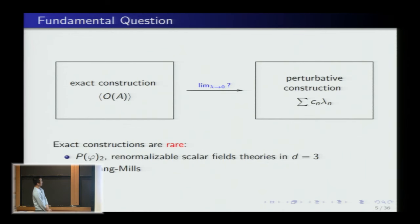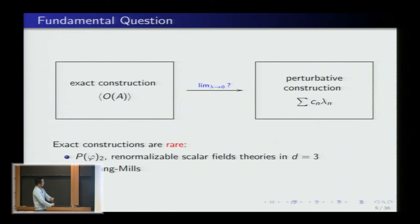For example, we have scalar field theories in dimension 2 — P(φ)₂, polynomial interactions — and possibly renormalizable scalar field theories in dimension 3. The case I'm interested in is 2D Yang-Mills, because to my knowledge it is the only pure gauge theory that has a rigorous construction in the sense of having a measure and being able to compute expectation values exactly.